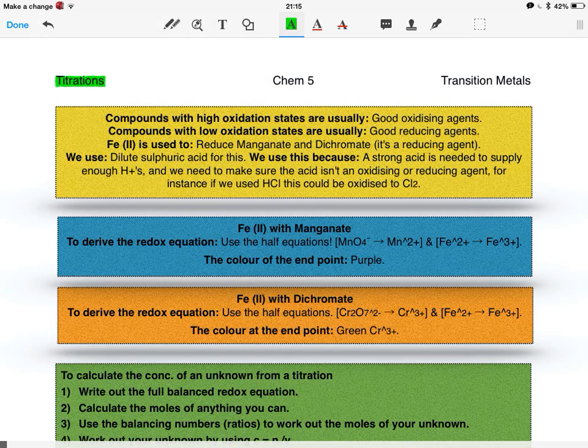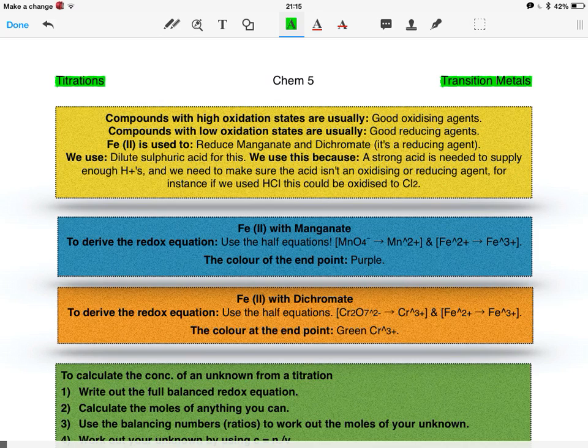So now I'm on to the titrations of the transition metals, and the transition metals make pretty good titrations because they've got their own colours, so they make their own colour changes. You don't need an indicator, and it can get pretty cool.